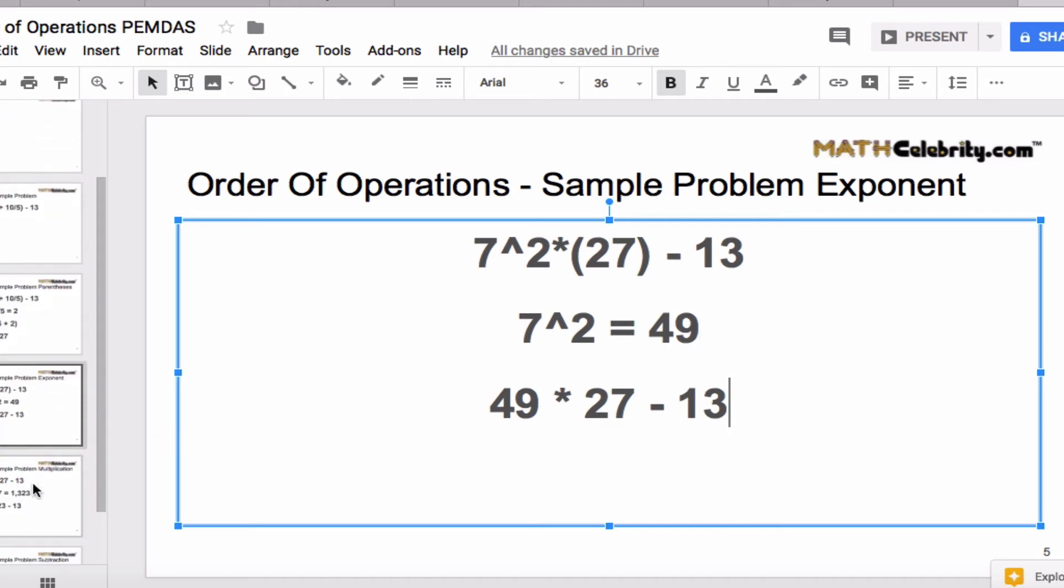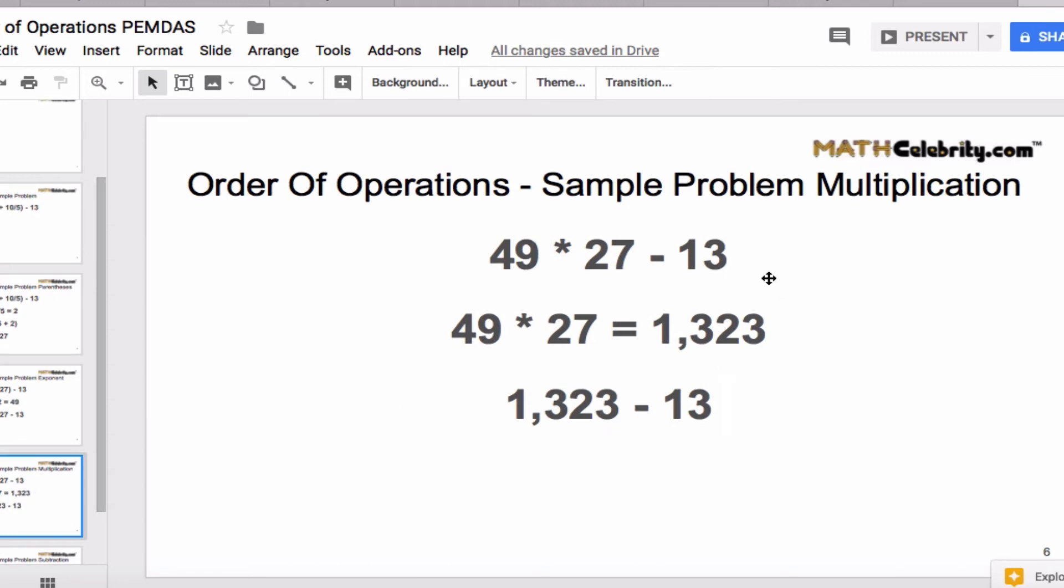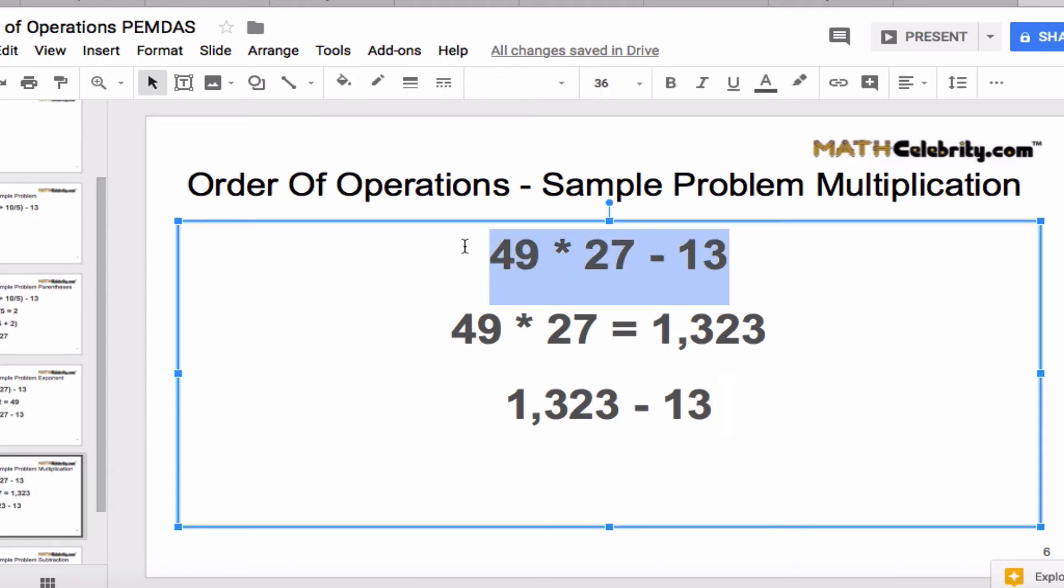So here is our simplified problem, and the next step in PEMDAS is M for multiplication. So we want to evaluate this piece right here. So 49 times 27 is 1,323. So our simplified order of operations problem becomes 1,323 minus 13.